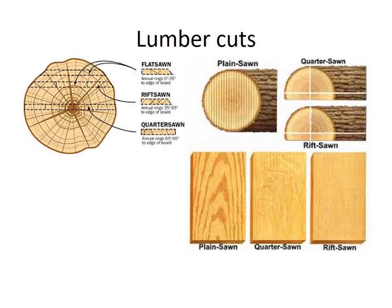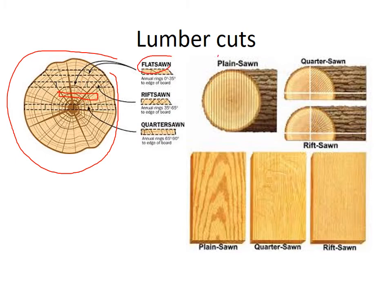Lumber cuts — notice the plain sawn. Depending on where the board is cut out of the log, it produces different ring patterns. A flat sawn, also called plain sawn, produces rings that are 0 to 35 degrees to the edge of a board, and it's taken generally from the outer area. Plain sawn is the most economic and easiest cut — it's what they get mostly in the lumber mill with a straight cut.